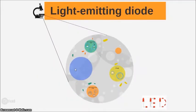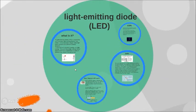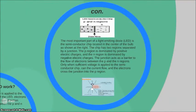Hello, today I'm going to talk about the light emitting diode. A light emitting diode is essentially a conjunction of two semiconductors that emits electromagnetic light when operated in a forward bias direction. LEDs convert electrical energy into light energy. They are frequently used as indicator lights in electronic devices to show whether the circuit is closed or not.